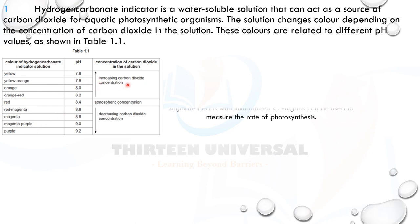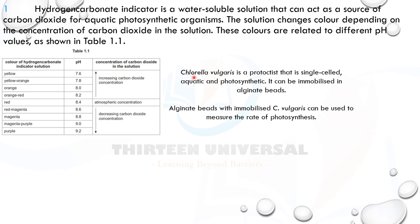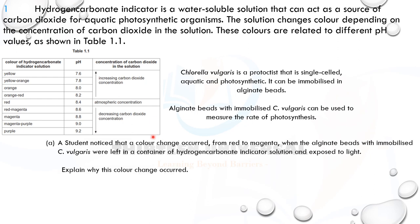Chlorella vulgaris is a single-cell aquatic photosynthetic organism. It can be immobilized — meaning fixed to an insoluble support — in alginate beads. Alginate beads with immobilized C. vulgaris can be used to measure the rates of photosynthesis. Question A: a student noticed a color change from red to magenta when the alginate beads with immobilized C. vulgaris were left in hydrogen carbonate indicator solution and exposed to light.